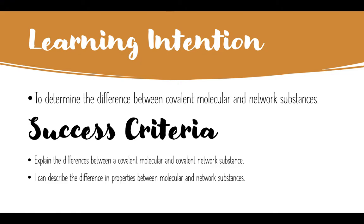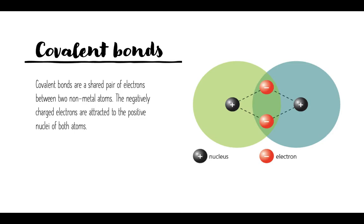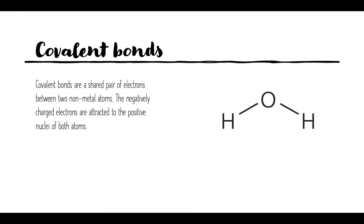Before we jump into what is a molecule and what is a network, I first want to clarify that a covalent bond is a shared pair of electrons between two non-metal atoms. Your negatively charged electrons, shown here in red, are attracted to the positive nuclei, shown in black, of both atoms. Those nuclei are positive because they contain positively charged protons. This diagram is only one way of representing a covalent bond. Another way is through a projection diagram that we looked at in the last lesson on molecular shapes, where covalent bonds are represented by lines connecting oxygen and hydrogen on either side of the molecule.